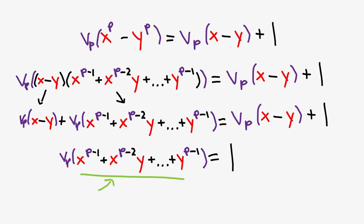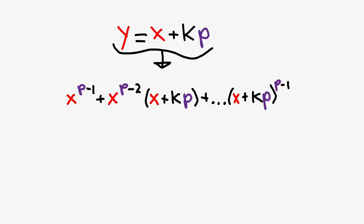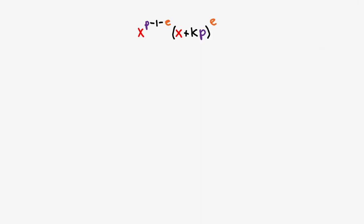We can do so by analyzing this expression, mod p squared. We start by letting y equals x plus kp, where k is an integer, and substitute that. We then do a term-by-term analysis. Notice that each term of the expression is of this form, where e is an integer from 1 to p minus 1 inclusive. If we expand this term, we get the following.